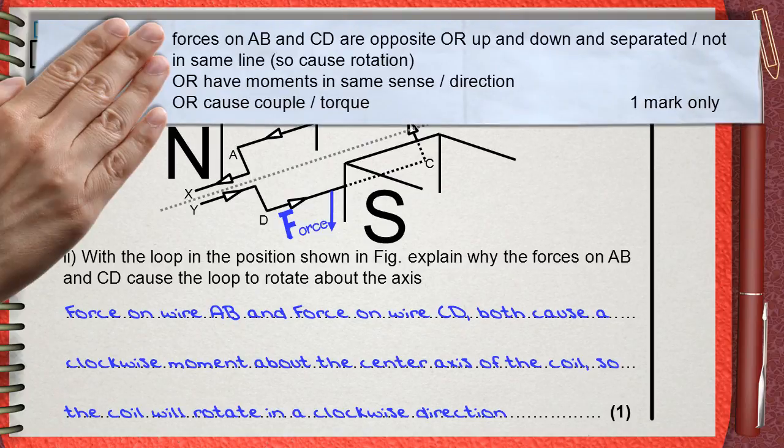The mark scheme gives some possibilities for the mark. Forces on AB and CD are opposite, or up and down and separated. They are not in the same line, so this causes rotation.